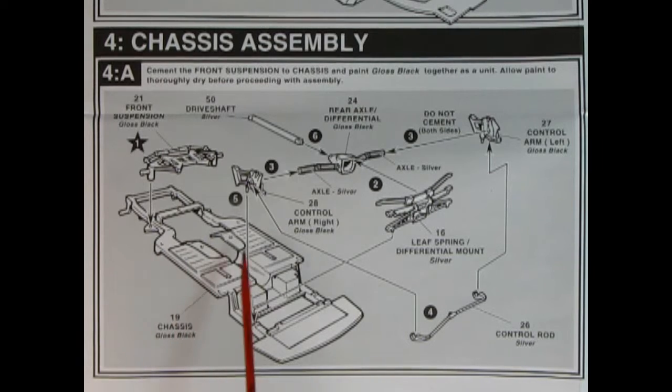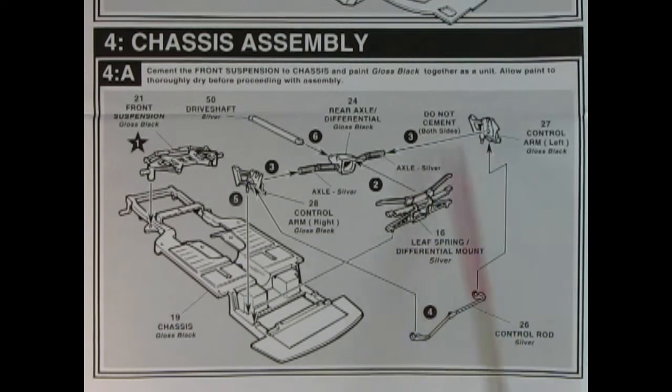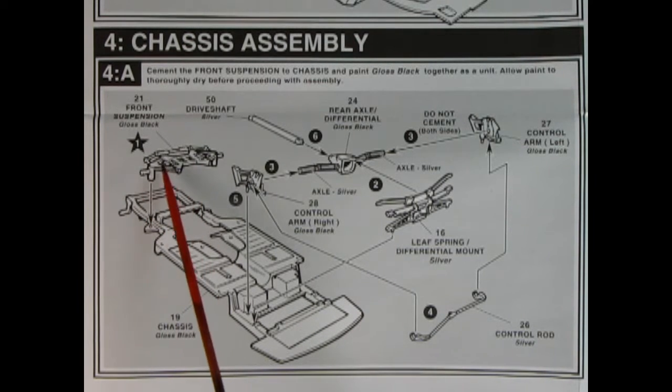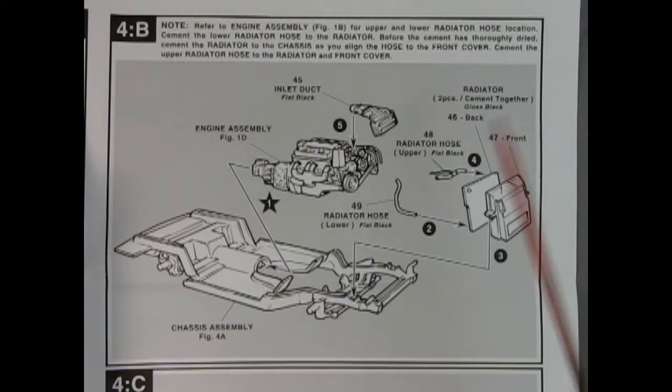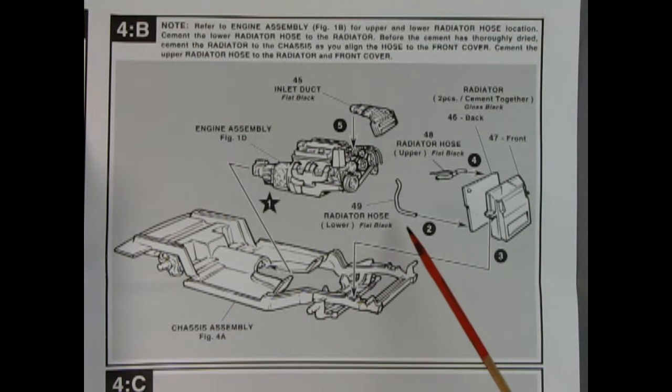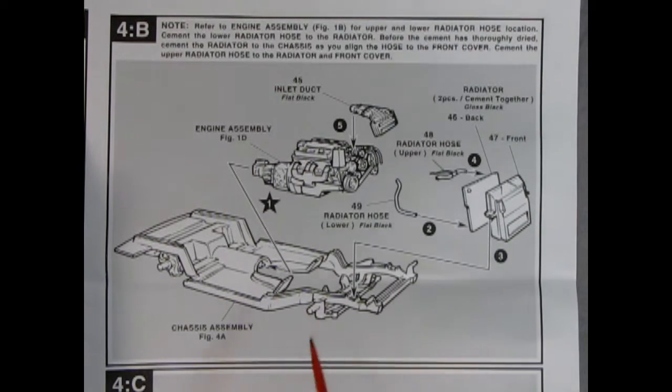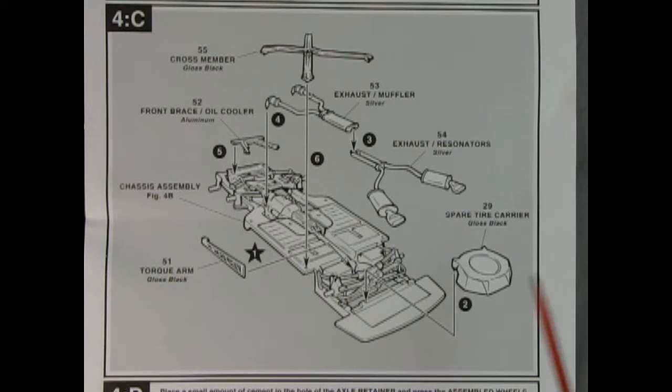Panel 4 is our chassis assembly. Here you can see the chassis pan. We've got our control arms left and right going into our rear axle with the driveshaft and the leaf spring mount. Then we've got our control rod in the back and our front suspension with the rack and pinion steering up front. If I sound a little crazy, it's because today I'm off the leash. In panel 4B, we can see our engine being dropped into the chassis assembly. And then there's those radiator hoses. We have our upper and lower and our two-piece radiator. And all this goes right on that chassis. Panel 4C basically finishes our chassis assembly. We've got our spare tire carrier goes on the back, and then our exhaust pipes and mufflers. We also have our front brace oil cooler and the torque arm. And then the crossmember goes on the top.